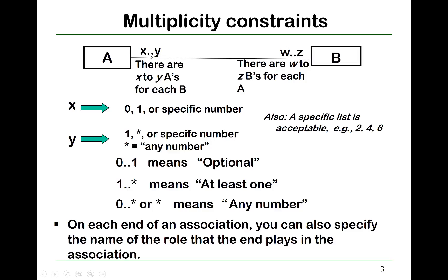The x..y notation can also be a specific list of acceptable numbers, such as a list of three numbers: two, four, and six. Also, 0..1 means optional; 1..* means at least one; and 0..* or just * means any number.